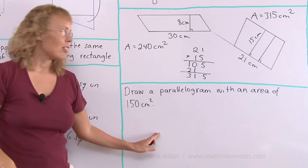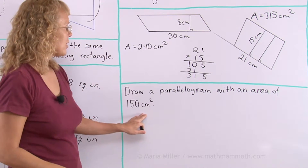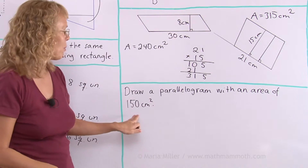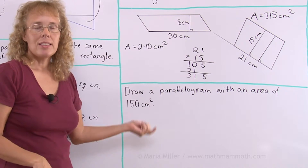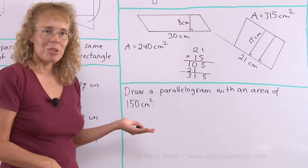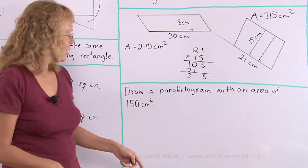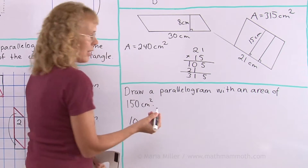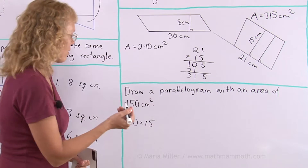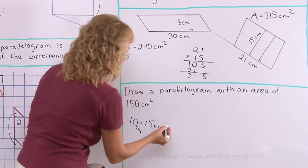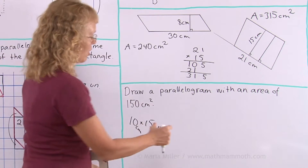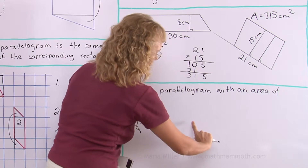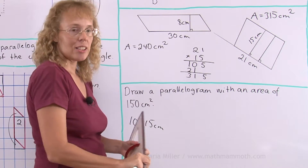Lastly, draw a parallelogram here with an area of 150 square centimeters. If the area has to be 150, then I know that my base times altitude has to equal 150. It doesn't say anything about the base or altitude so I can choose my numbers — I'll just choose two numbers, base and altitude, so that the product is 150. For example, I could put 10 and 15: 10 centimeters times 15 centimeters will work great.